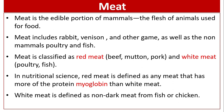Meat is the edible portion of mammals — the flesh of animals used for food. Meat includes rabbit, venison (which is the meat of deer and other game animals), as well as non-mammals like poultry and fish. Meat is classified as red meat, which includes beef, mutton, and pork, and white meat, which includes poultry and fish.